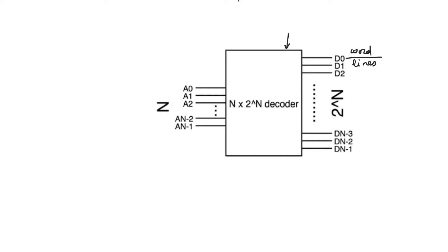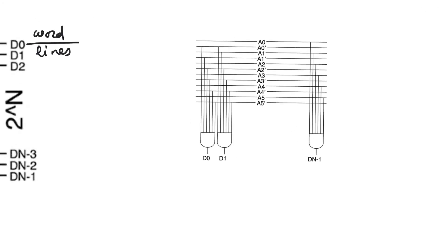In essence, a row decoder is a circuit which asserts only a single output at a time. At a fundamental level, the row decoder is just a set of AND gates, and each of these AND gates will have its output equal to one only for a unique combination of the inputs. Here we have address lines numbered A0 to A5, giving a 6-bit address, and we provide not only the true forms of the address bits but also their complement forms.